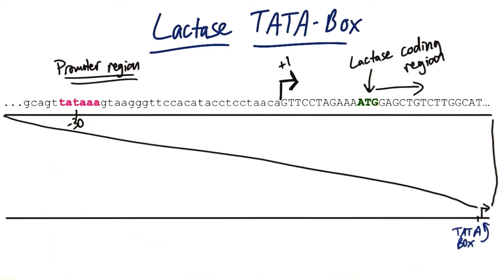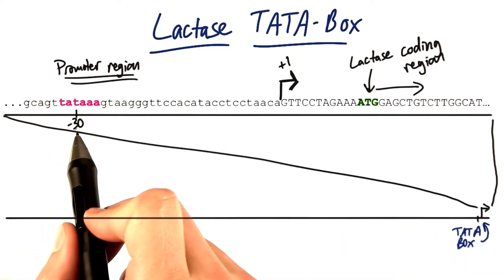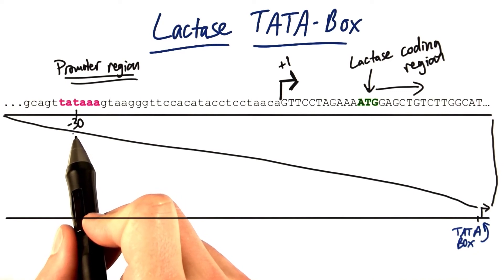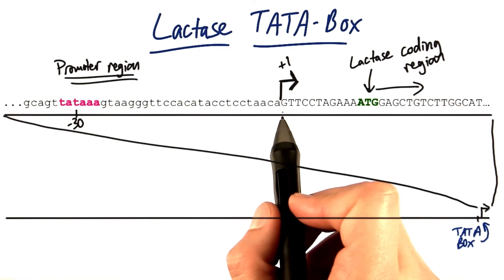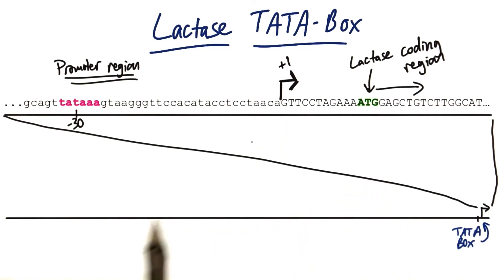Now what you're about to hear is not made up. It's not hypothetical. This is reality. In the lactase gene, if we zoom out, we'll see that this TATA region is about minus 30. It's 30 base pairs, 30 letters in front of the transcription initiation site for the lactase gene.